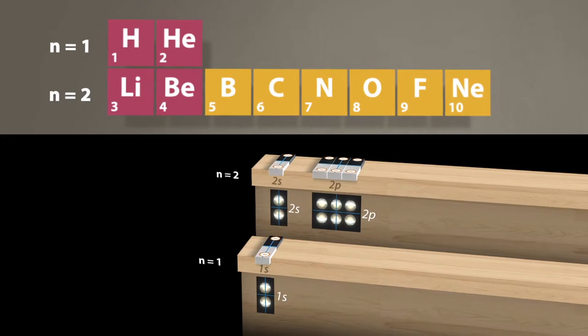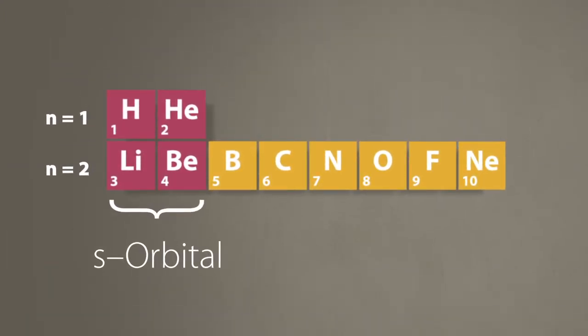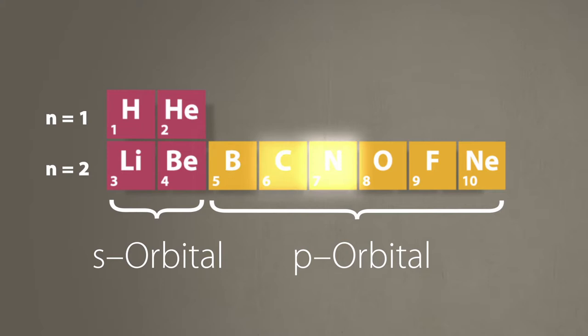We have thus explained the arrangement and number of elements of the first two periods of the periodic table. S-orbitals can accommodate a maximum of 2 electrons. P-orbitals, a maximum of 6 electrons.